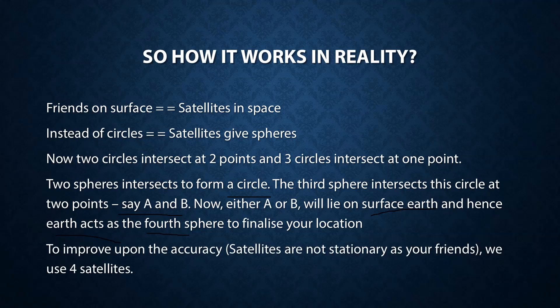Another point is to improve upon the accuracy, we use four satellites, since satellites are not as stationary as your friends. So just for improving the accuracy, we have another satellite. You can say in the analogy case, you are using a reference of four friends, another friend just to make sure that the other three friends have not given wrong distances or have not done wrong calculations.